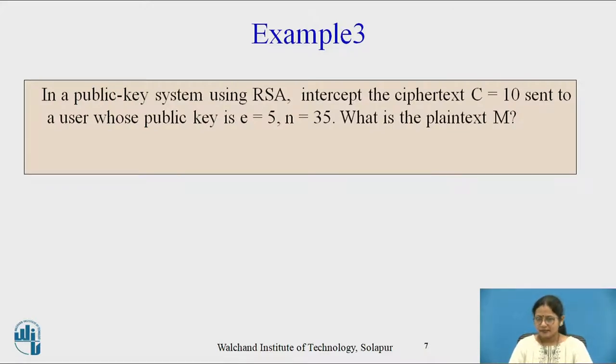Now another type of example. Read carefully: in a public key system using RSA, intercept ciphertext c which is 10, sent to a user whose public key is e=5 and n=35. Now time to do the reverse calculation to find out the plaintext M.